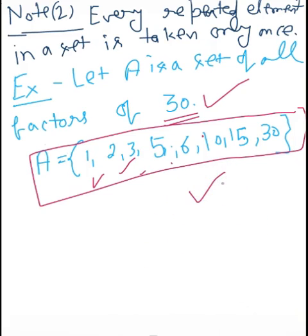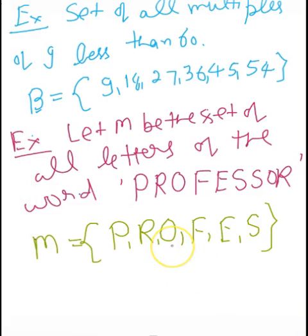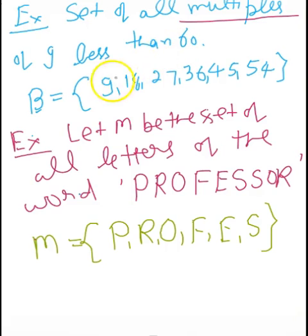This is the roster form or tabular form — the mostly used form. Note that if there are any repeated elements, we always put them only once. Let's take another example: the set of all multiples of 9 which are less than 60.